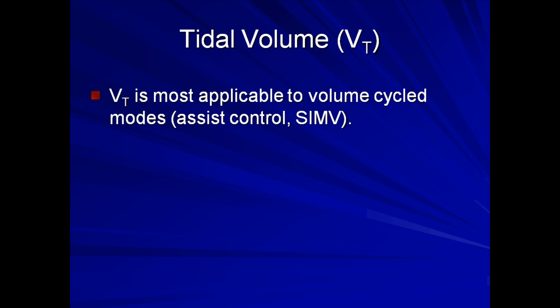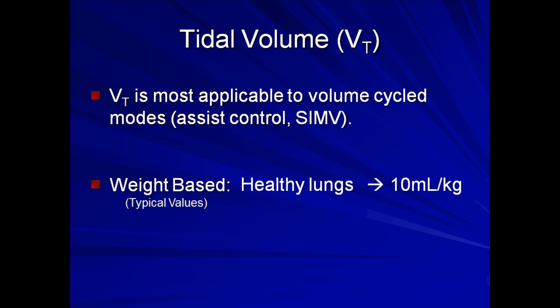The next option to discuss is tidal volume. Tidal volume is most applicable to volume-cycled modes, such as assist control and SIMV. In pressure-controlled modes, tidal volumes are still important but are not under direct control of the ventilator. Initial programmed tidal volumes should always be weight-based. Typical values are 10 mL per kg of ideal body weight for healthy lungs — this might be used when a patient is intubated for a reason not directly related to pulmonary pathology, such as neurologic catastrophe, drug overdose, or during an operative procedure.